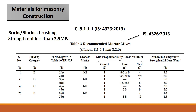Building category B is for seismic zone 2, C for zone 3, D for zone 4, and E for zone 5. The grade of mortar used is M3, M2, M1, and H2 respectively. The mix proportions consist of cement, lime, and sand.